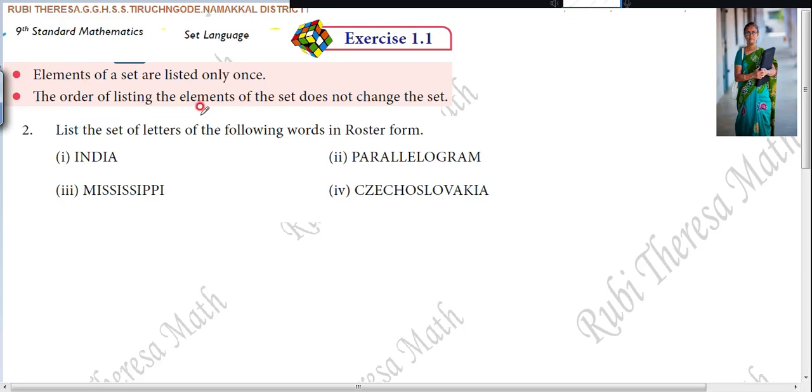List the set of letters of the following words in roster form. The words given contain letters - write them in roster form. First you should know what is meant by roster form. Roster form means elements are listed out, listing the elements.